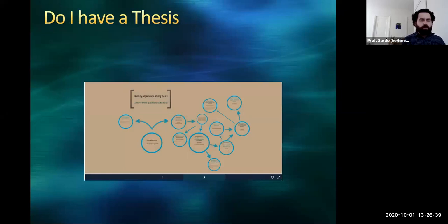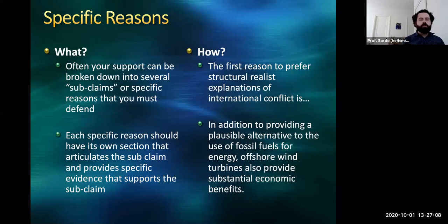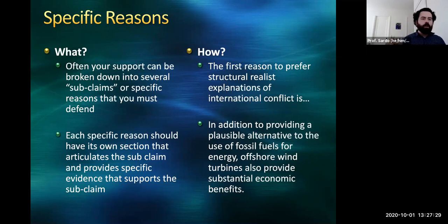I've included a link to a Prezi presentation — a flowchart that helps you evaluate whether you have a strong thesis. You can work through it with your thesis statement to figure out if you have a compelling argument. When moving beyond your thesis to your specific reasons, you break down your supporting reason into a series of subclaims or specific reasons to defend. Each specific reason should be a section of your essay with specific evidence supporting it. For example: 'The first reason to prefer structural realist explanations of international conflict is...' or 'In addition to providing alternatives to fossil fuels for energy, offshore wind also provides substantial economic benefits' — showing the transition from one specific reason to the next.